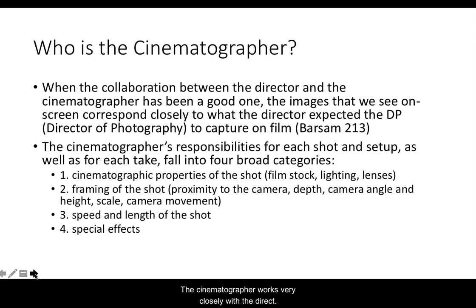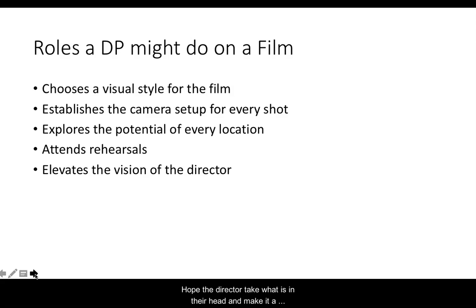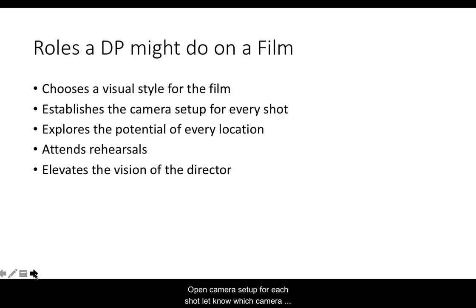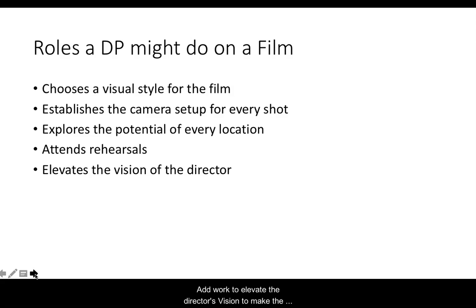The cinematographer works very closely with the director. Some of the things that a DP — a director of photography — might do on a film: help choose the visual style, help the director take what is in their head and make it a more concrete unified vision, help set up the camera for each shot, explore the potential of locations to see how they would appear on film, and attend rehearsals to work to elevate the director's vision and make it come to life on screen in the best way possible.